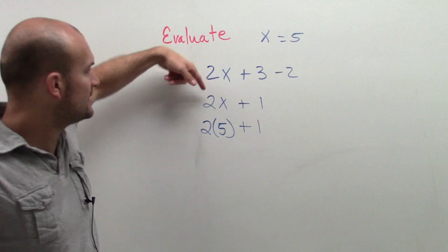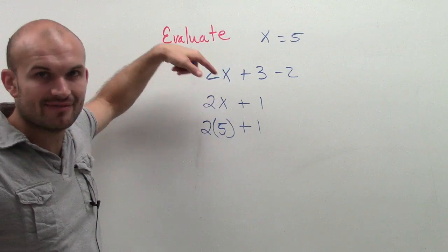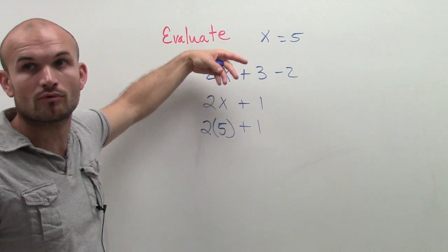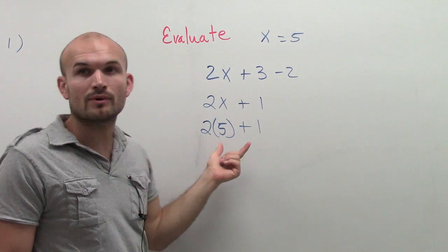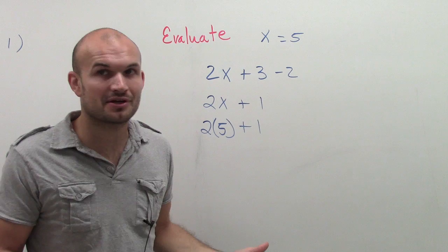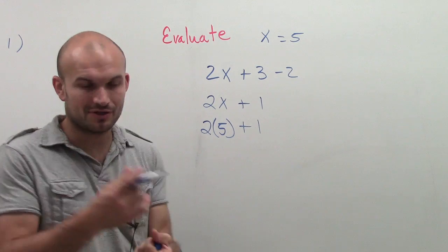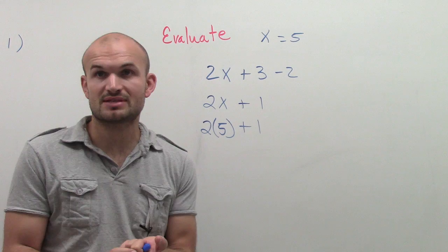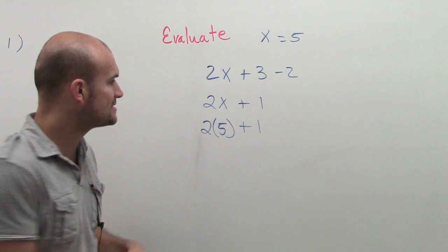When multiplying a number times a variable, we just leave it like that. A number next to a variable represents multiplication. However, when we represent multiplication between two numbers, we don't just put them next to each other. That'd be 25. We have to use parentheses, a multiplication symbol, or some other multiplication notation. I'm going to use parentheses.